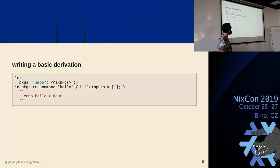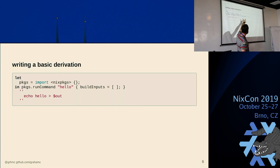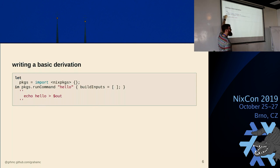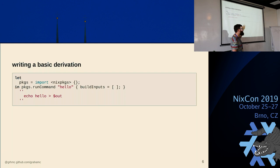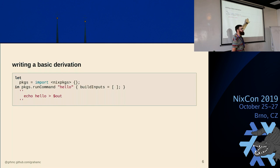The runCommand function takes three parameters: a name, an attribute set where you can provide build inputs or other data, and a string which is the command to execute — that will be executed by Bash. The build inputs attribute set isn't necessary in this case, but it needs to be present. It could be a completely empty attribute set.